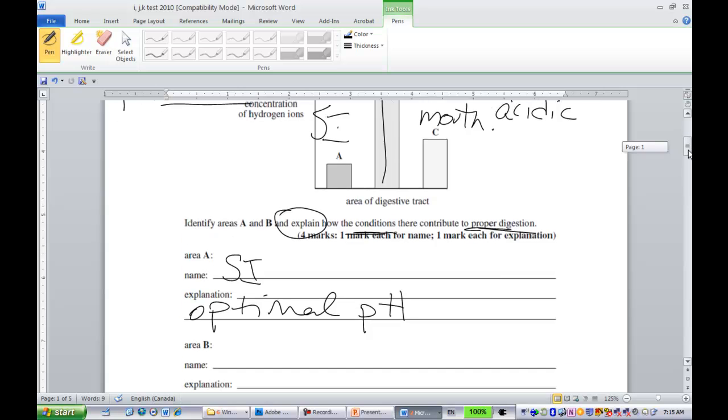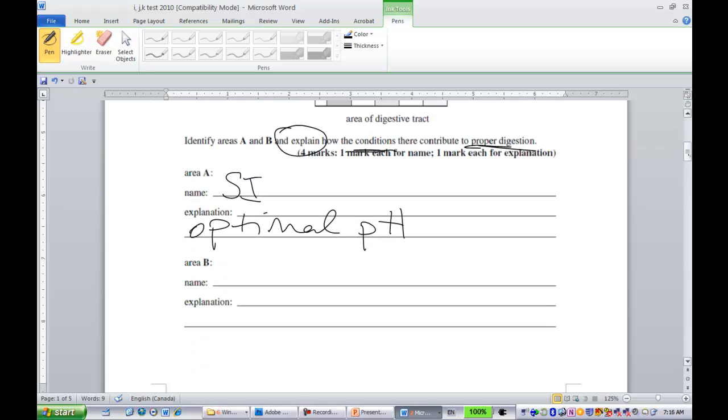Area B was the stomach, and either or, you could say optimal pH again, or you could say that the pH activates pepsinogen into the active form of the enzyme pepsin, either or. But killing bacteria doesn't really help, or doesn't help with proper digestion.